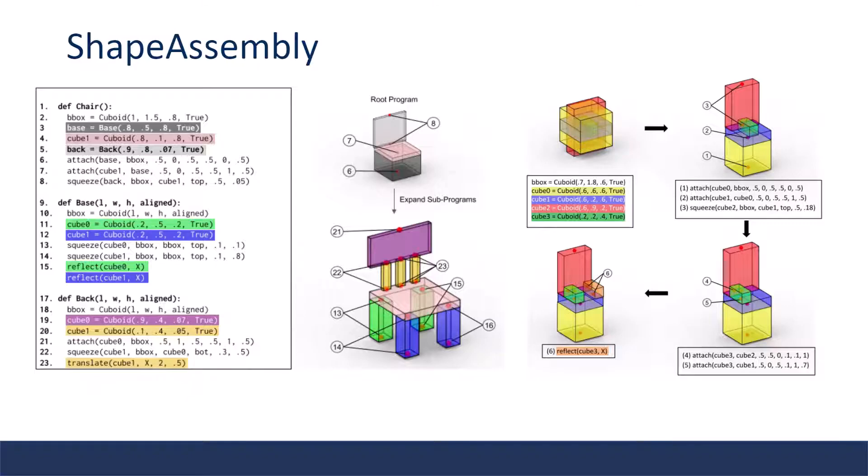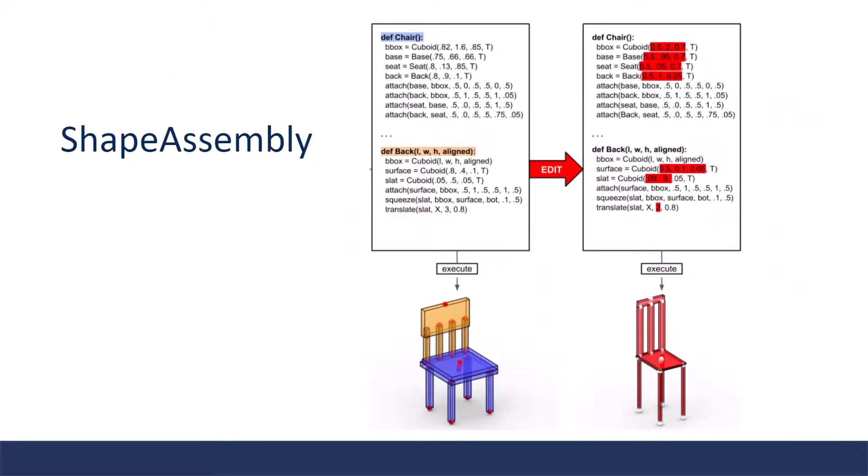The reflect command is a high-level macro that captures more complex spatial relationships such as symmetry. At execution time, each macro is expanded into a series of cuboid declarations and attachment operations. Here is an example that shows how editable and interpretable the programs are.